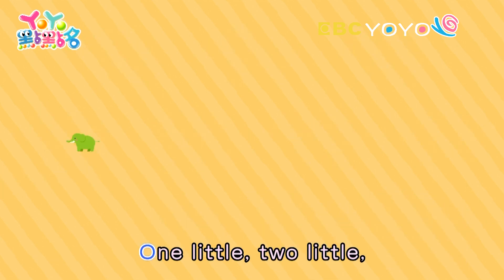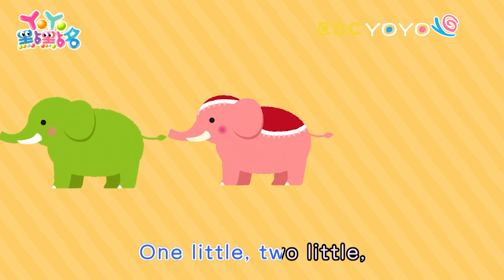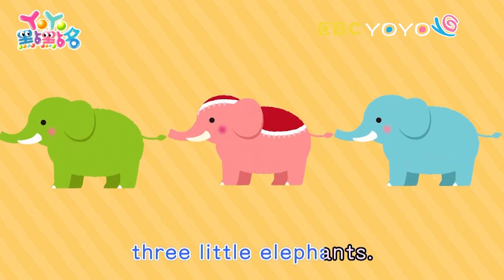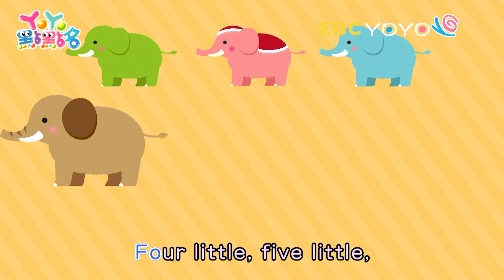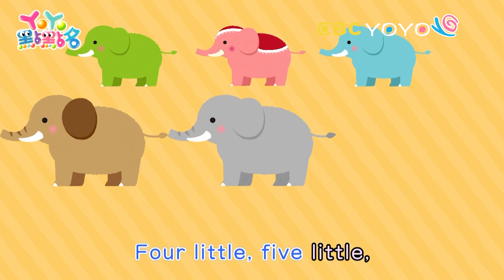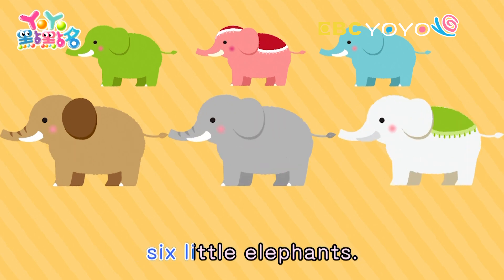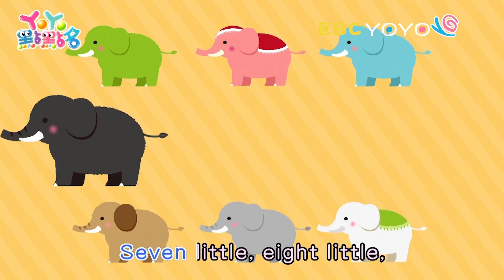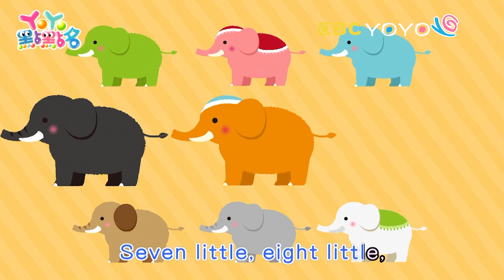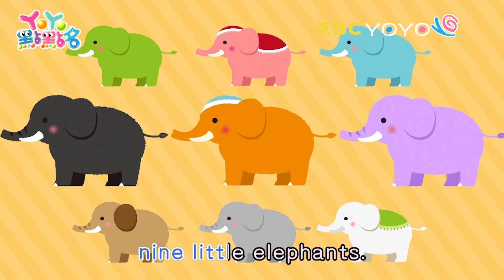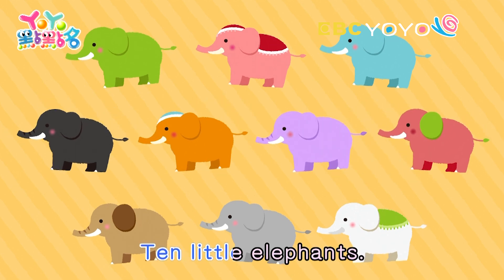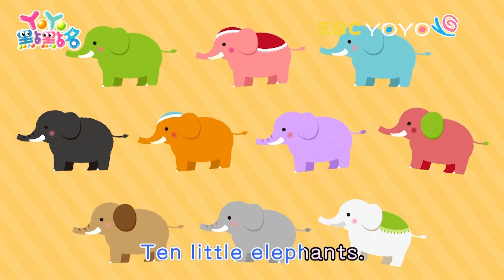One little, two little, three little elephants. Four little, five little, six little elephants. Seven little, eight little, nine little elephants. Ten little elephants.